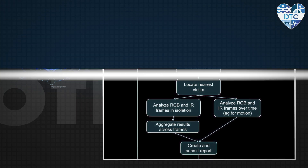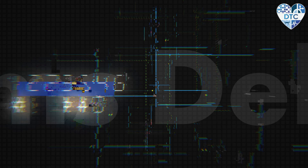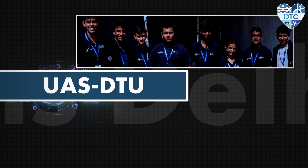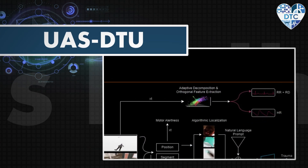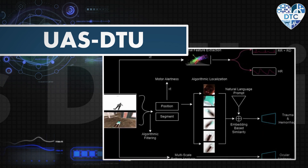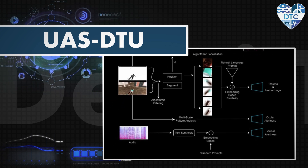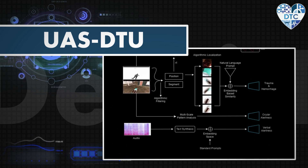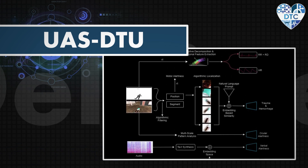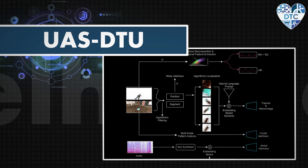Team UASDTU — Unmanned Aerial Systems Delhi Technological University — is made up of students in different disciplines including engineering, computer science, machine learning, and medical. They are an interdisciplinary, research-oriented undergraduate team that has brought together novel ideas in aerial robotics, biosensing, automation, simulation, and deep learning paradigms, along with new ways of organizing scientific endeavors. The team's mission involves working on humanitarian aid, disaster relief, and surveillance-based applications.